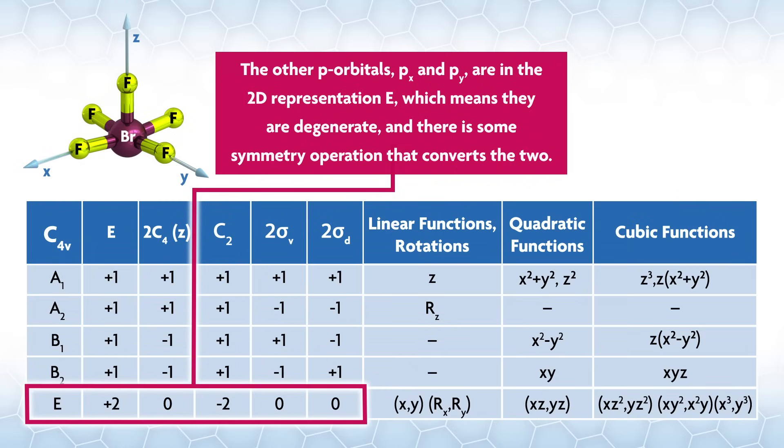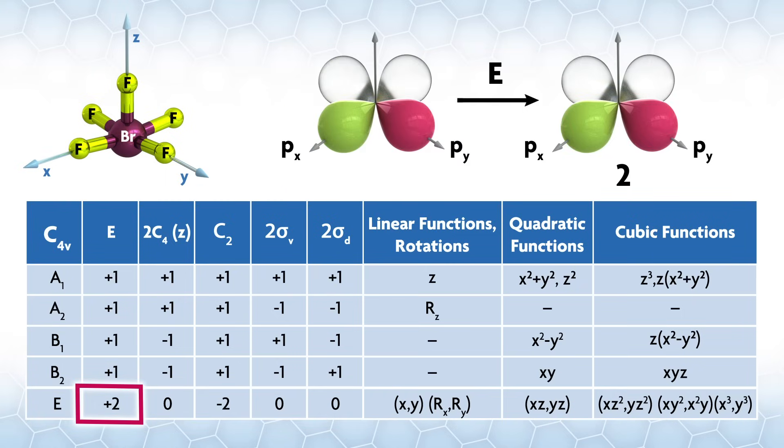The other p orbitals, px and py, are in the 2D representation E, which means they are degenerate, and there's some symmetry operation that converts the two. Let's draw these two orbitals in the xy plane and see what happens to them as we do the symmetry operations.